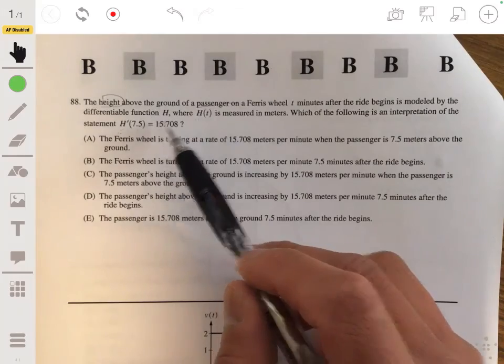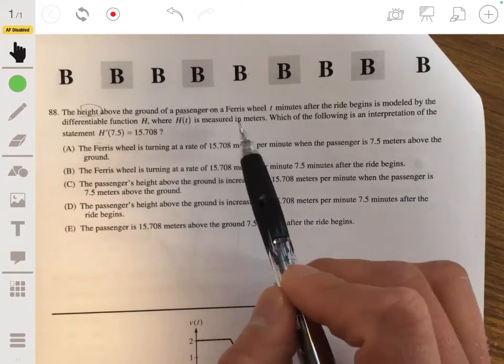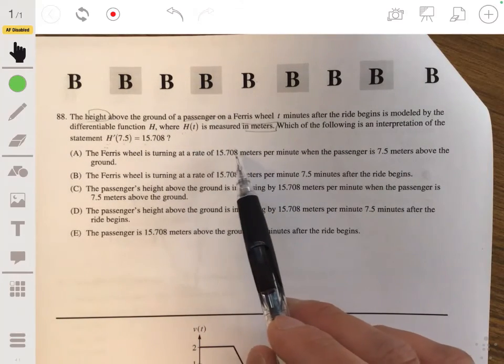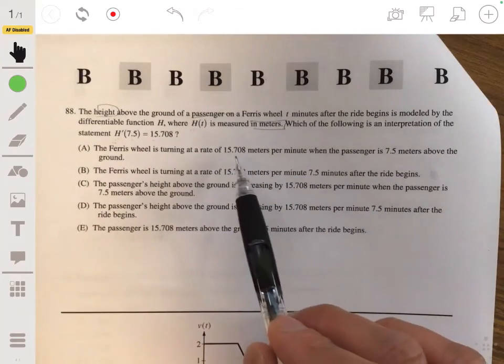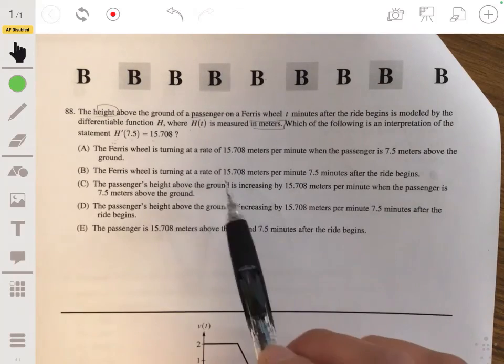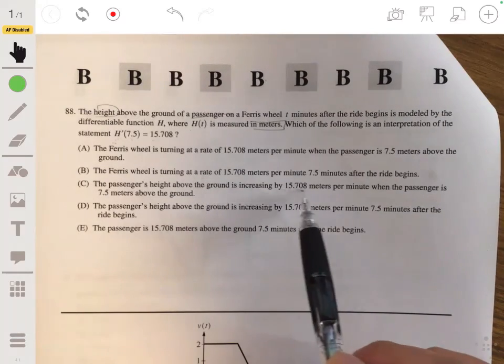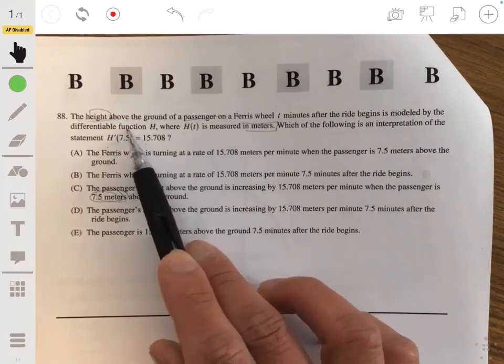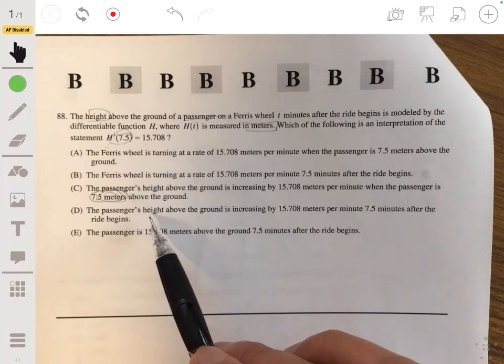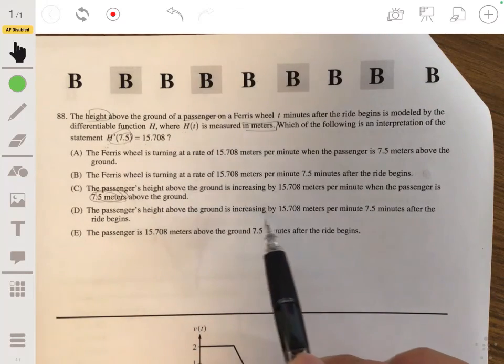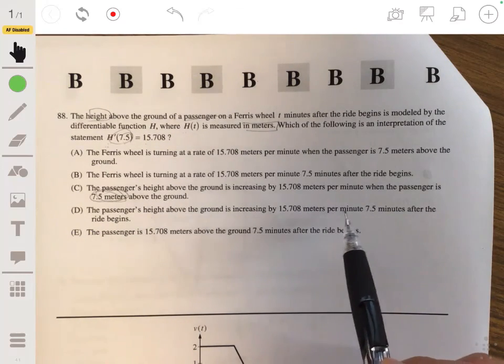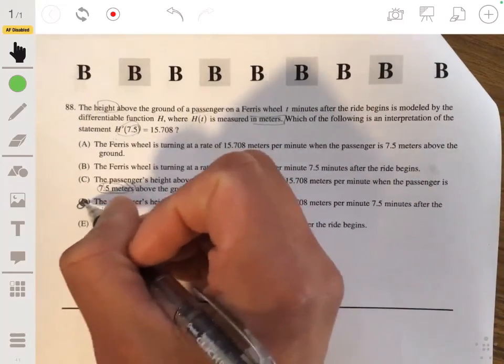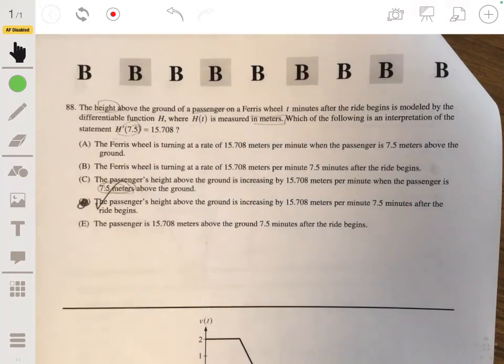So h prime of 7.5 is saying that at t equals 7.5, so at 7.5 minutes, the height above the ground of the passenger is changing at a rate of 15.708 meters. So let's look to see what best matches that. So we're looking at the rate of change of height. So it's not going to be a, not that passenger height above the ground is increasing. So close, but not 7.5 meters above the ground. This is time, 7.5 is the time. The passenger's height above the ground is increasing by 15.708 meters per minute, 7.5 minutes after the ride begins. Alright. So there we go. That's our answer. The answer will be D.